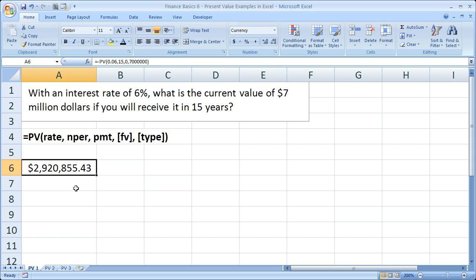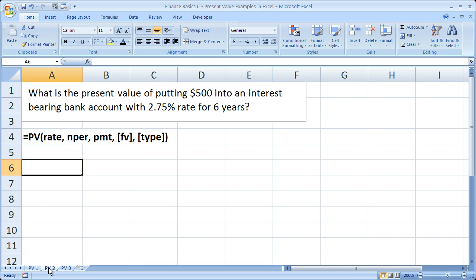Alright, so let's go ahead and go to the second present value problem on the second tab. What is the present value of putting $500 into an interest bearing account with a 2.75% interest rate for 6 years? Now this would be considered the basic annuity problem, right? An annuity - a set of equal cash flows that you're investing at an equal rate over a period of time. So the equal cash flows being $500 invested, let's say, once a year for 6 years. We're going to keep it easy by keeping it at years for now.